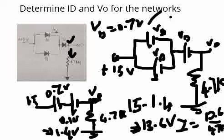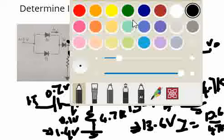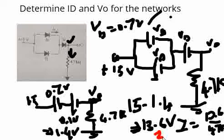13.6 divided by 4.7 gives 2.89, so the current here is 2.89 milliamps. That will be ID. V0 is 13.6 volts. That's how we solve this problem.